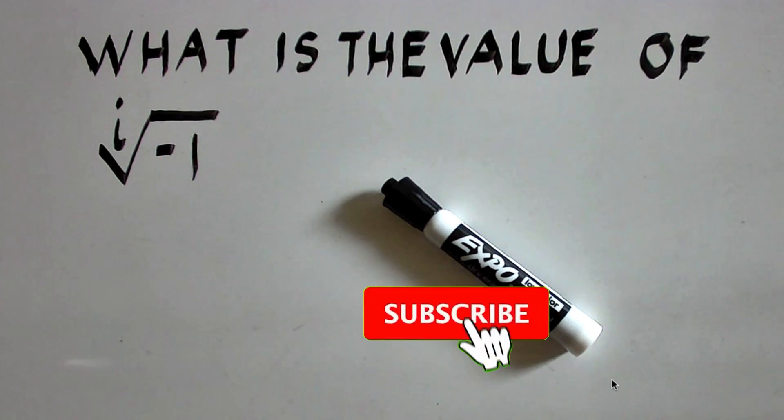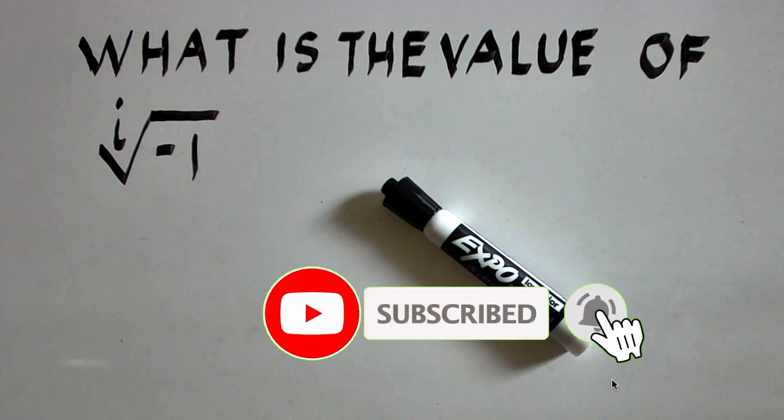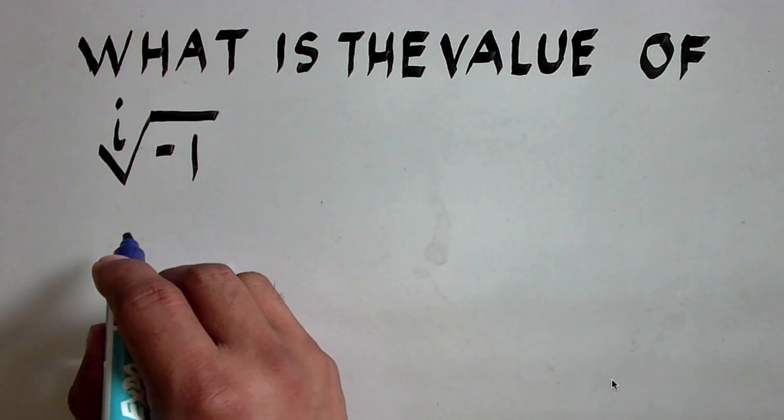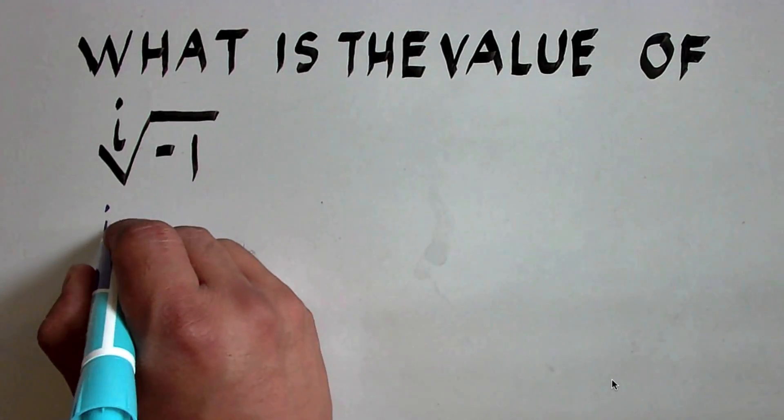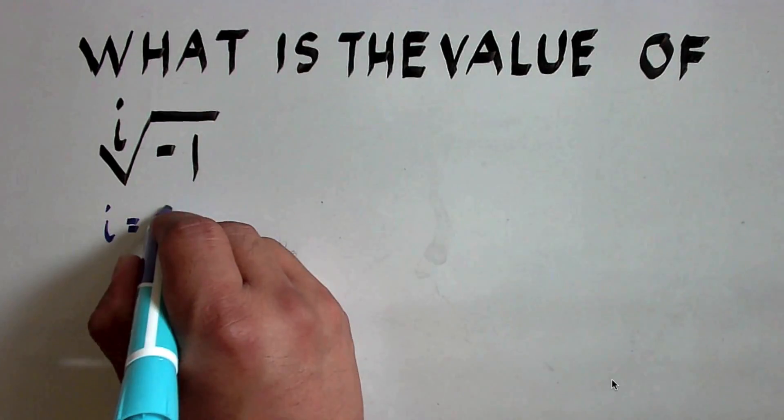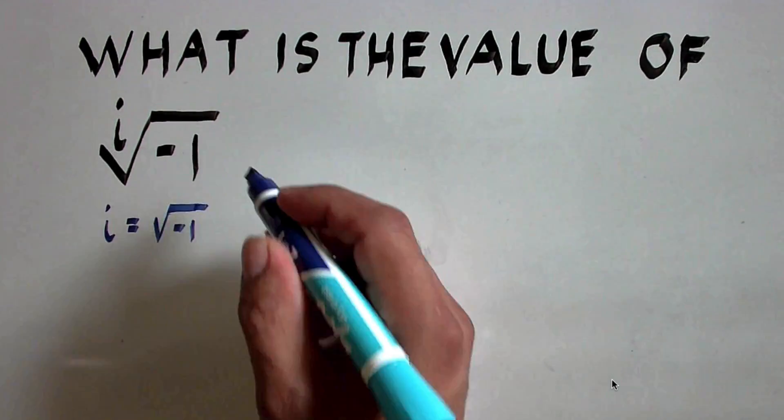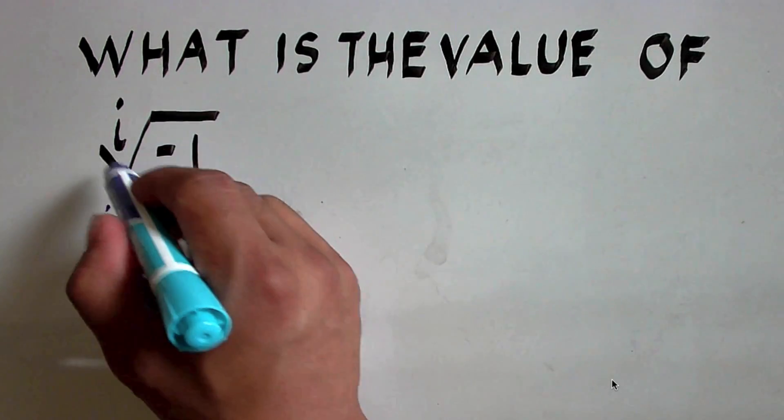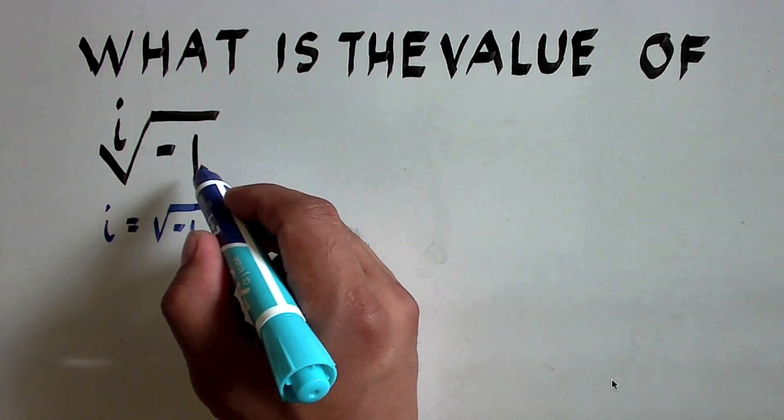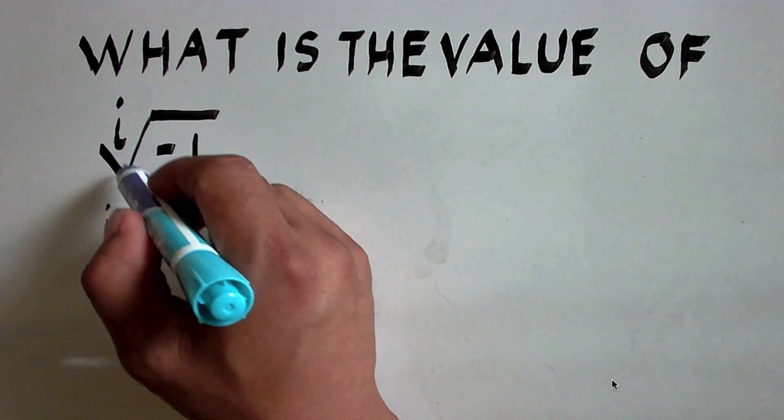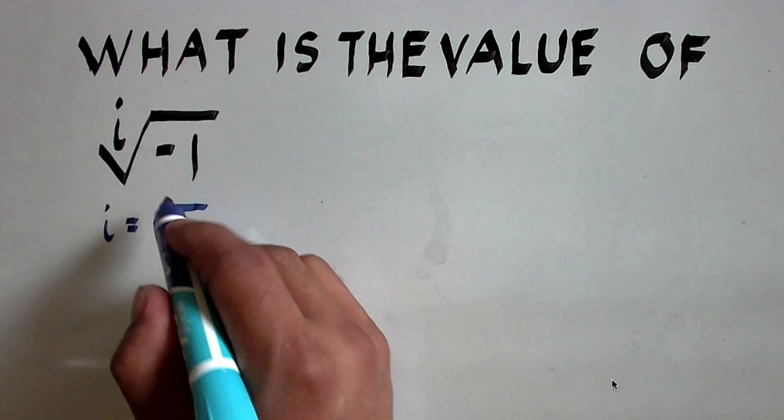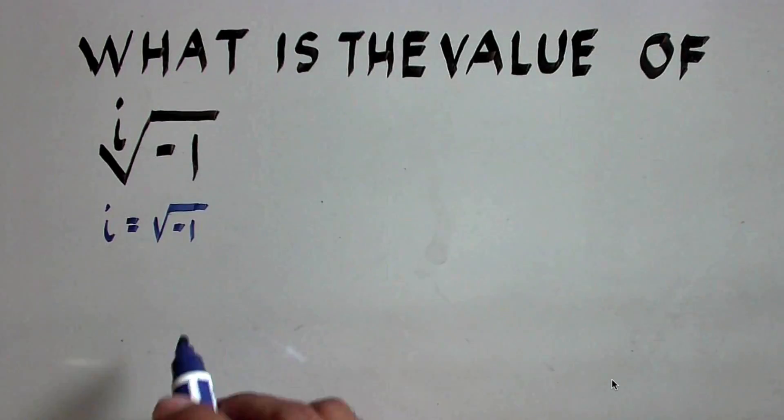What is the i-th root of negative 1? Before we solve this, let's recall that i is equal to the square root of negative 1. But what we have here is the i-th root of negative 1. In other words, i is the index of this radical, and the radicand is negative 1.